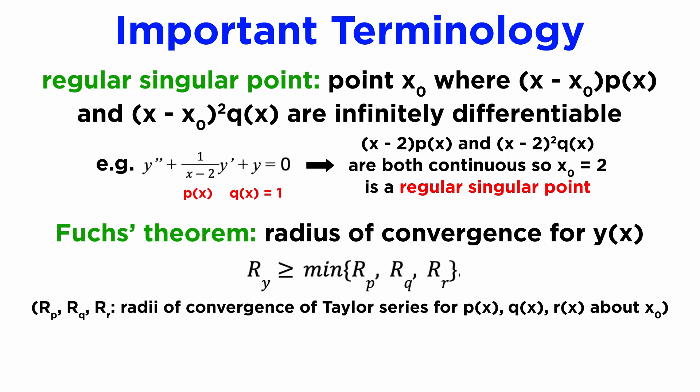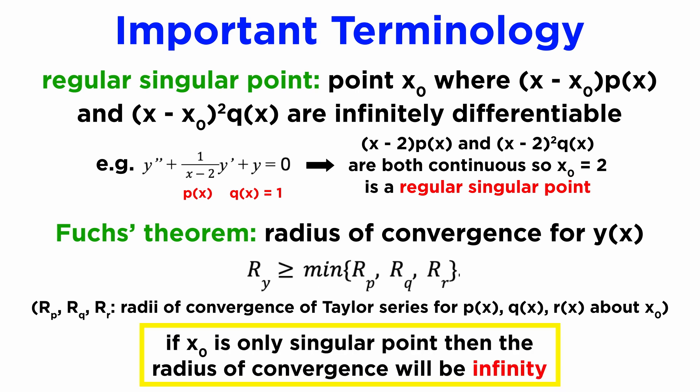If we use the Frobenius method to find a power series solution about x₀, then the radius of convergence for our series will be greater than or equal to the distance between x₀ and the nearest singularity of p, q, or r, and this result is known as Fuchs' theorem. The payoff is that if we use the Frobenius method to find a power series solution about a regular singular point x₀, and x₀ is the only singular point, then the radius of convergence of the resulting power series will be infinity. This is far better than the Leibniz method, which cannot handle singularities like this at all.